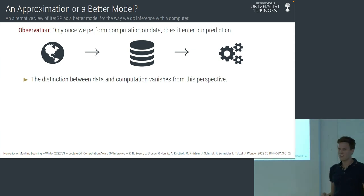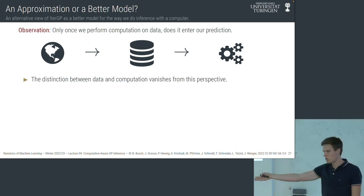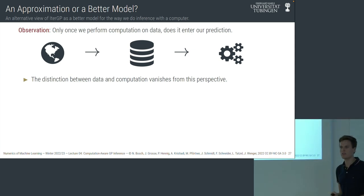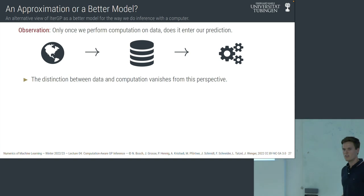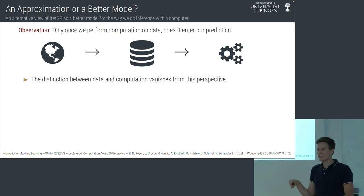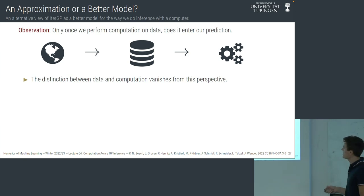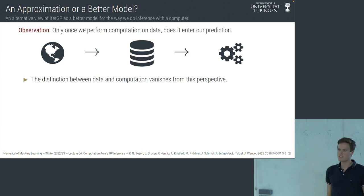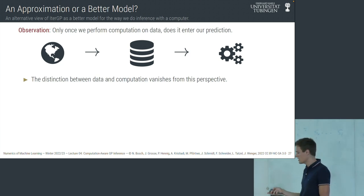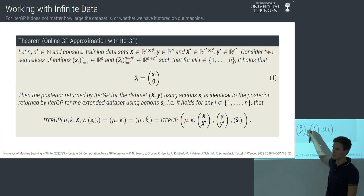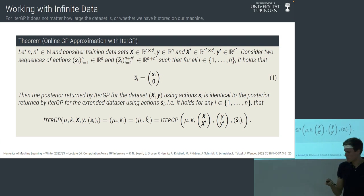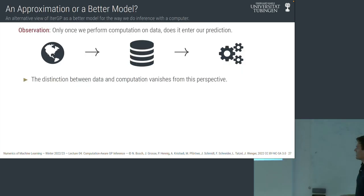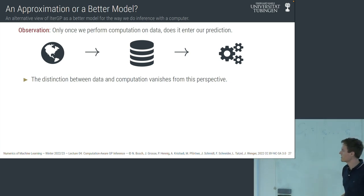This leads to a slightly philosophical interpretation. When we collect data for GP regression, we go out and make measurements — say, buoys in the ocean — store the data on disk, and then use a machine to compute a prediction. But data on your disk that you haven't computed on is no different from data you haven't collected yet. Only data that you actually compute on constitutes a real observation. In this sense, we can think of computation itself as the act of making an observation.